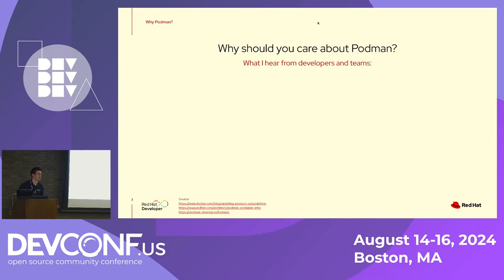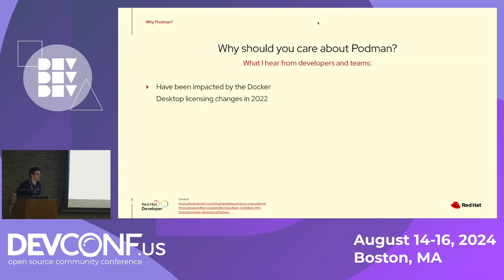I want to talk about why I personally care about Podman, and with some of the conversations I have with developers in the community and also customers — why other people care about Podman as well. One of the most important things is that the Docker licensing changed for Docker Desktop back in 2022. Now every developer seat on a Docker Desktop plan is $5 per person per month, and that's added up. Organizations have started to look for alternatives that are free and open source.